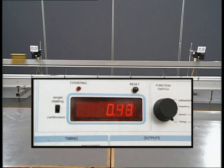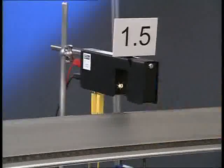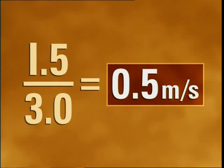For this vehicle to travel a distance of 1.5 meters, it takes 3 seconds. Average speed is distance, which is 1.5 meters, divided by time, which is 3 seconds. So the speed is 0.5 meters per second.